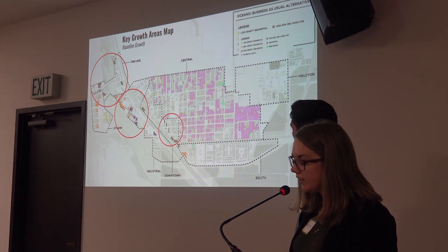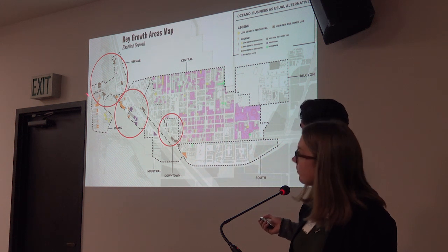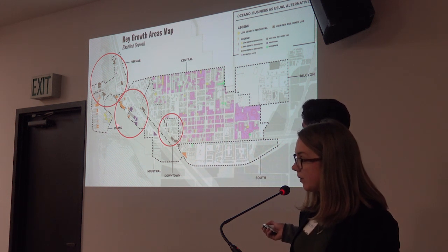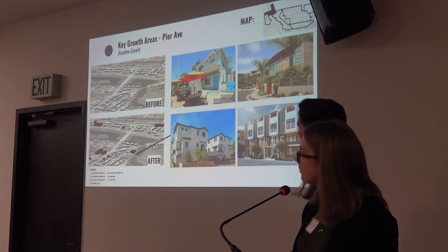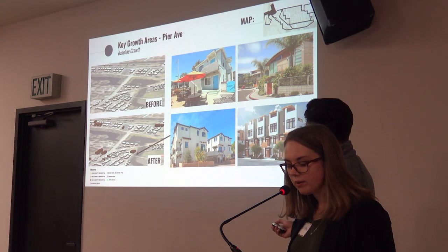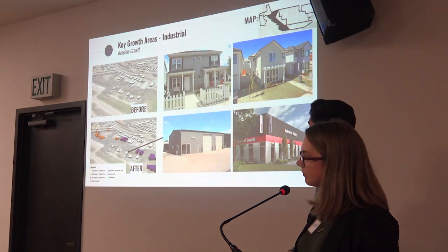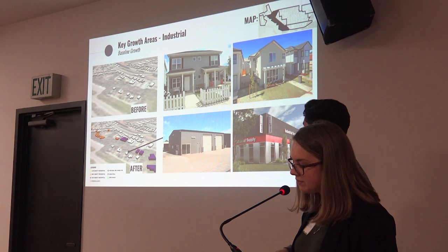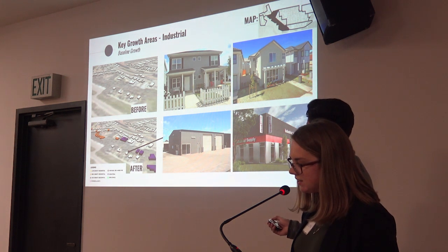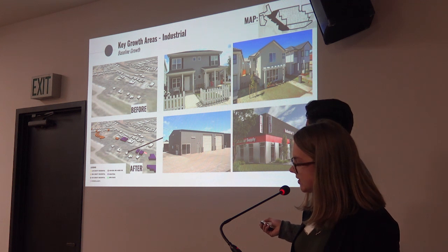These are the three key growth areas identified by the baseline growth scenario. They are centered around Pier Avenue, the industrial neighbourhood, and downtown. The picture here is a model showing Pier Avenue accommodating high-density residential housing, concentrated in vacant parcels along Pier Avenue and Highway 1. The industrial neighborhood continues to be developed with industrial buildings while medium-density housing like townhouses fills the north end. Industrial uses are identified in purple with residential uses indicated in orange.